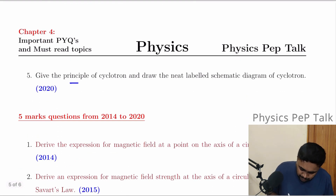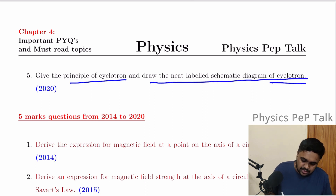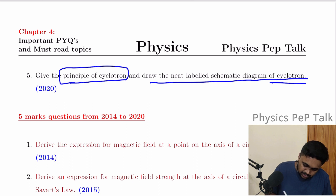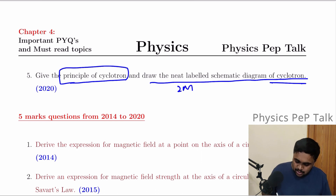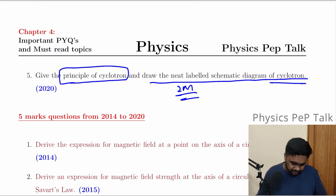State the principle of cyclotron and draw a neat labeled schematic diagram of a cyclotron. Principle is 1 mark, neat diagram is 1 mark — that's 2 marks — and totally 3 marks you will be getting.